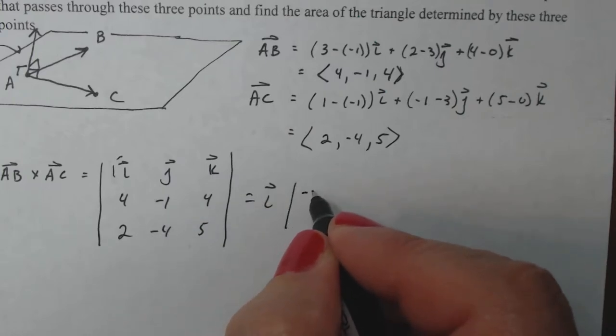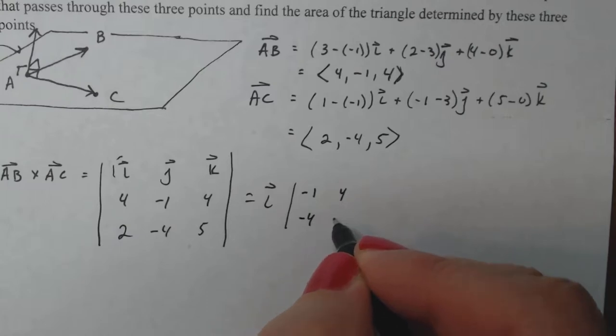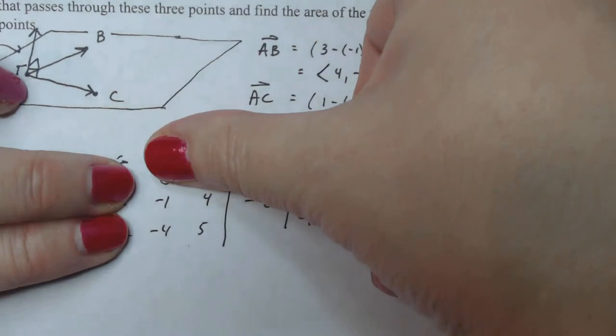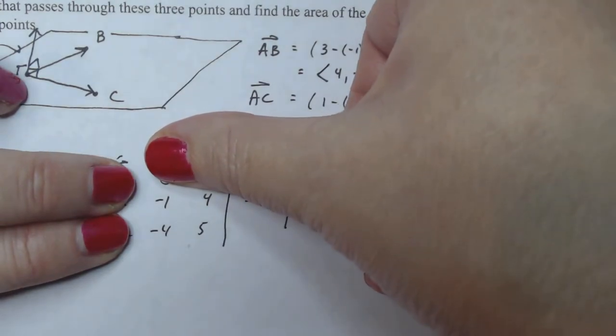So I'm going to have to find the determinant of minus 1, 4, minus 4, 5. Cross out the column in the row. It leaves you with those four numbers that you want to find the determinant of.